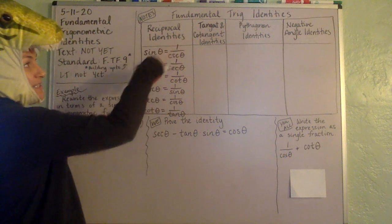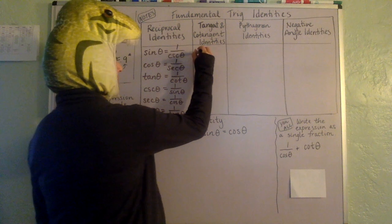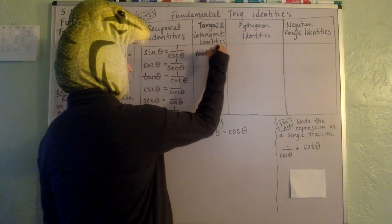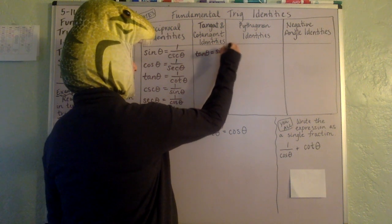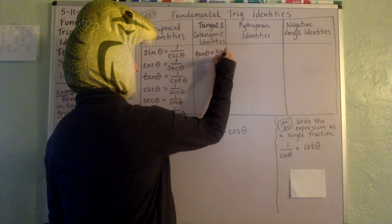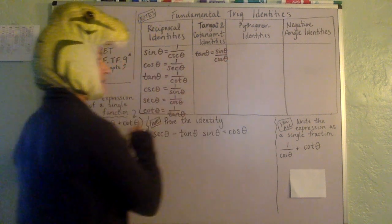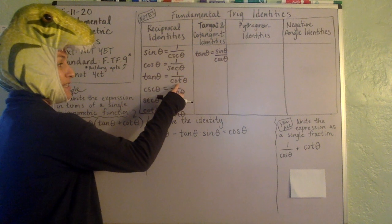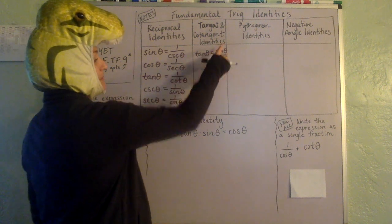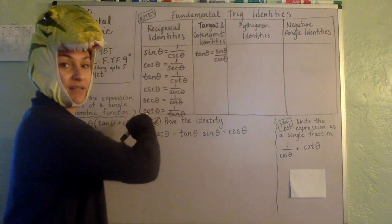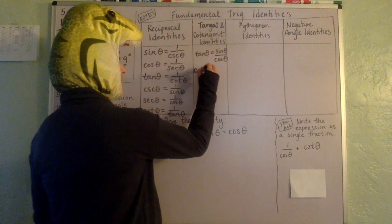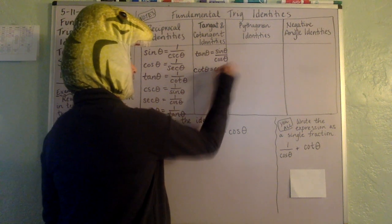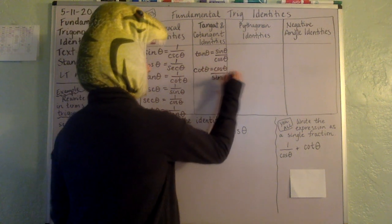As for the tangent and cotangent identities, we have just two. Tangent is sine over cosine — so notice tangent could be one over cotangent, but tangent could also be sine over cosine. And cotangent is cosine over sine.